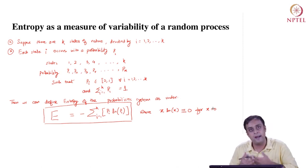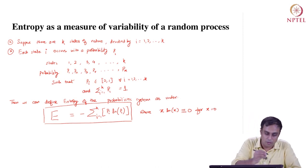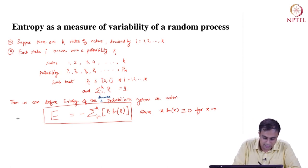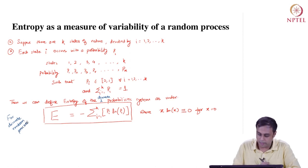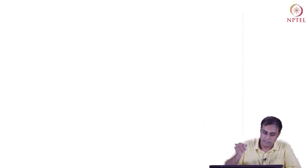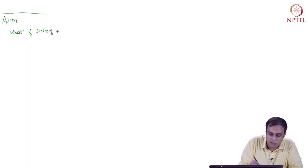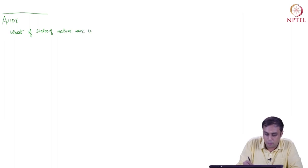The system we have worked with is a discrete probabilistic system — a discrete random process. This is the entropy definition for a discrete random process. What if the states of nature were continuous? Let us look at that as a little aside. We can define entropy for the case where the states of nature are continuous.